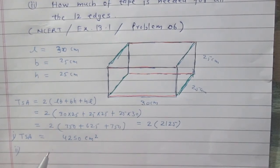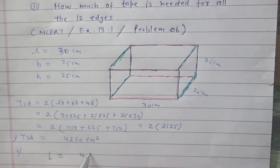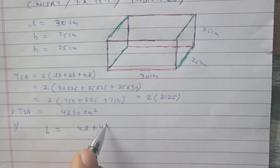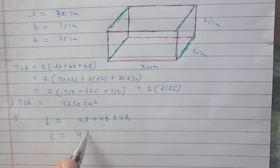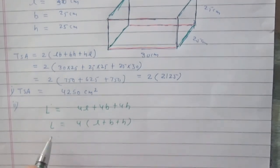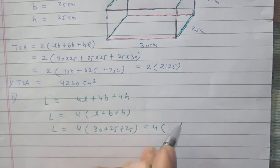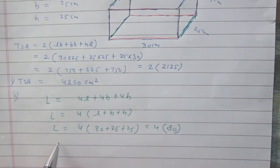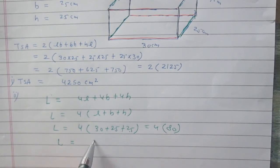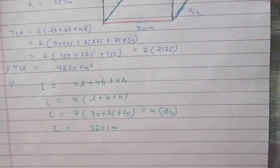The total length of tape is the sum of all edge lengths: 4×length + 4×breadth + 4×height, which equals 4(l + b + h) = 4(30 + 25 + 25) = 4(80) = 320 centimeters. So the length of tape needed for all 12 edges is 320 centimeters.